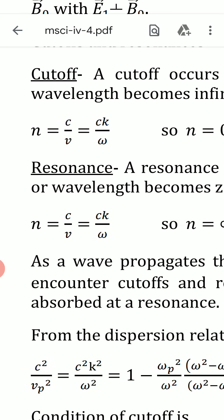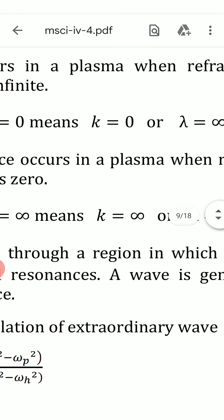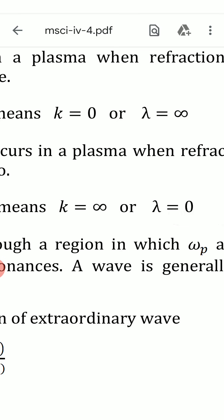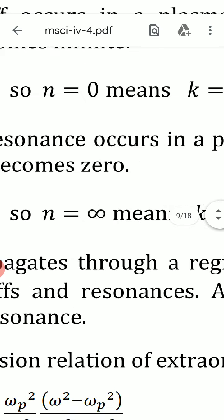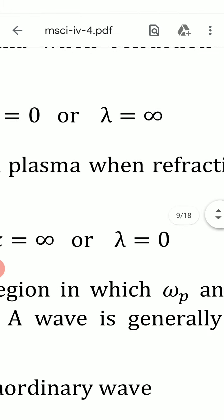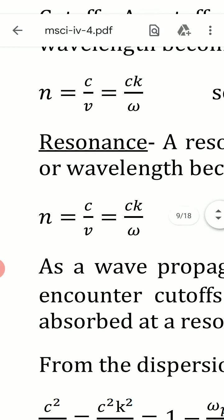Since n = c/v and v = Vp = ω/k, we can write n = ck/ω. So when n = 0, k is also equal to 0. And since k = 2π/λ, k = 0 means λ = infinity. So the condition of cutoff is: refractive index n = 0, or equivalently wavelength λ becomes infinite.